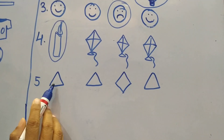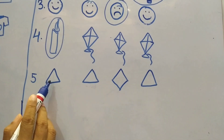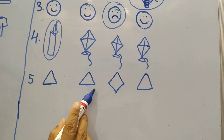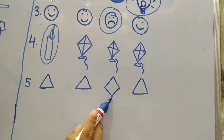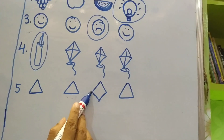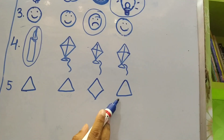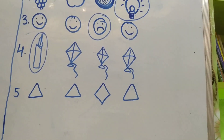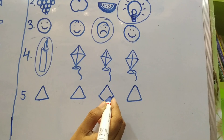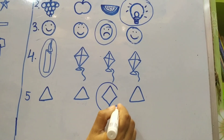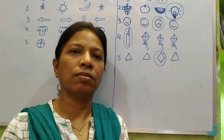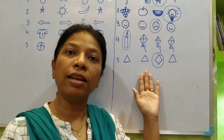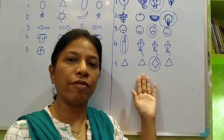Look at number five. These are shapes. Look at the shapes here — triangle, this is also triangle. Is this triangle? No, this is the diamond shape. And this one is triangle. So which one is the odd one out? The diamond shape becomes the odd one out. So this is what we had done in our previous video.